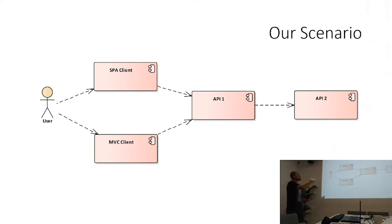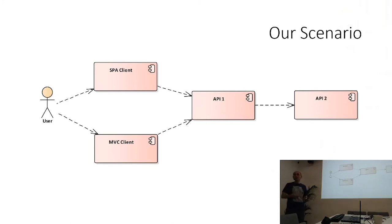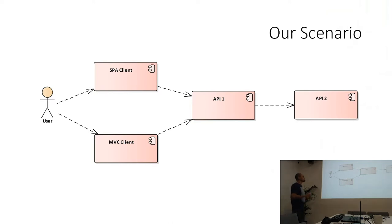We'd also have APIs: the first API called by the client application, and a second API — imagine it's some external API needed by the first API — a classical machine-to-machine scenario. This demo sample covers most of the needs you have. A single page application is also similar to a mobile application — it has roughly the same security constraints.